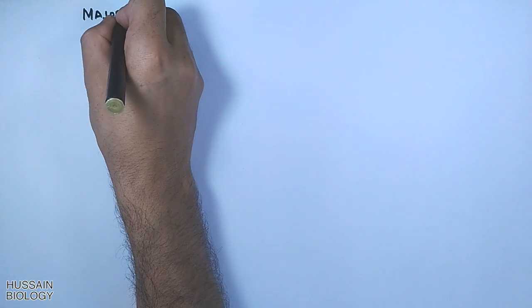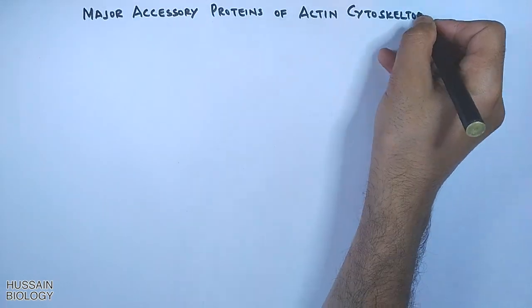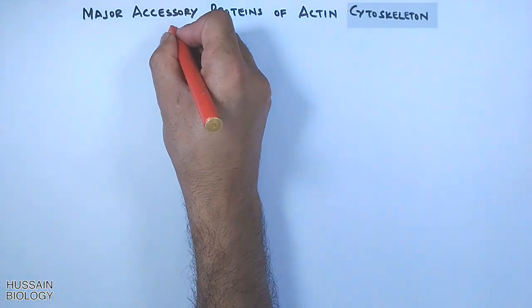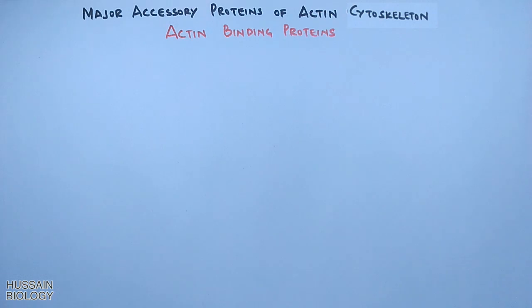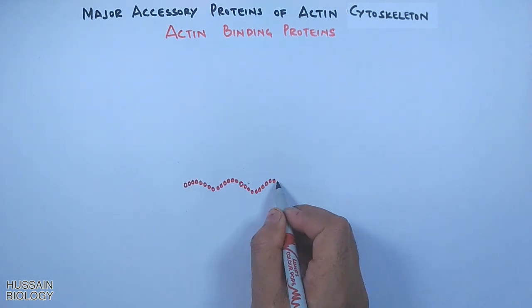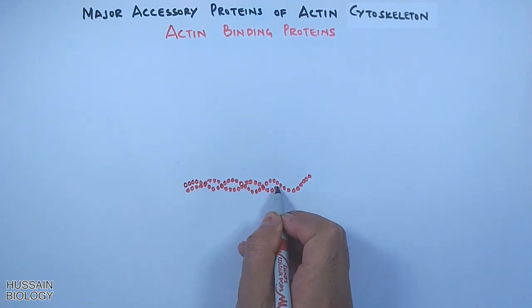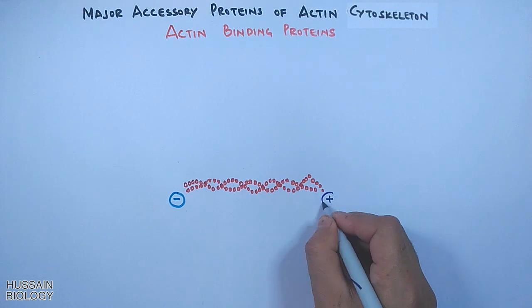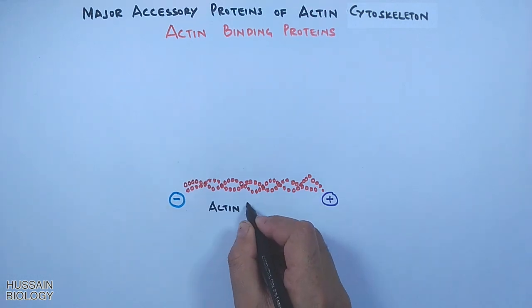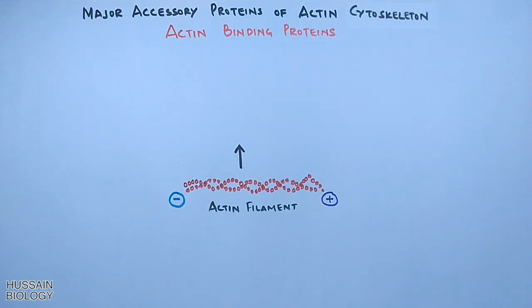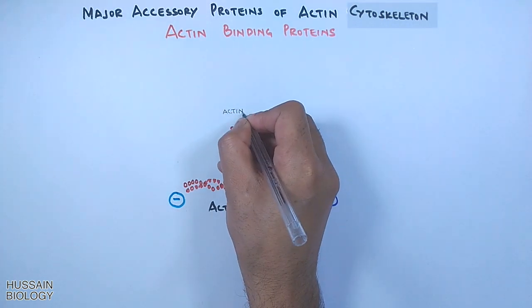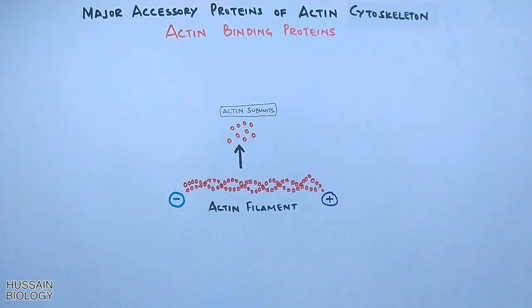In this video we will be discussing the major accessory proteins of the actin cytoskeleton, also known as actin binding proteins, and their functions. Here in this diagram you can see the simple structure of actin filaments having minus and plus ends denoted by the symbols. The actin filament is made up of small structural subunits called actin subunits, as shown in the diagram.